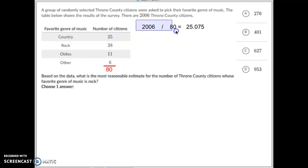So, we take the 2,006 divided by 80, we get our scale factor to be 25.07. Then, they ask, how many people in the whole city would like the genre of rock? Well, since 38 like rock, we're going to take our scale factor of 25.07 times 38, and that gives us a total of 952.85. If you round that off, that comes out to be 953.